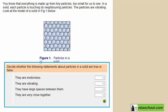Decide whether the following statements about particles in a solid are true or false: They are motionless, they are vibrating, they have larger spaces between them, and they are very close together. Which statements are true and which are false?